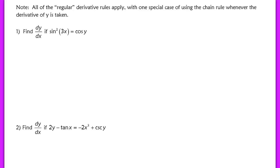In the previous two examples, we differentiated implicitly even though we didn't have to. In some cases we must use implicit differentiation because the function cannot be written in terms of y. For example, sine squared of 3x equals cosine of y cannot be turned into y equals some function of x. It's important to note that all regular derivative rules still apply — the product rule, quotient rule, and chain rule. But whenever you take the derivative of y, you must use the chain rule.